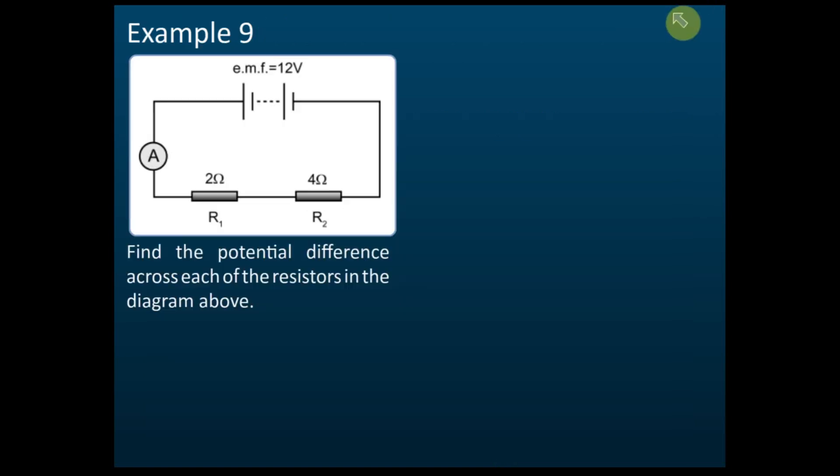Example 9: 12 volt, 2 ohm, 4 ohm. Find the potential difference across each of the resistors. As I told you, you must find the current first. To find the current, we use the same equation, V equals IR.